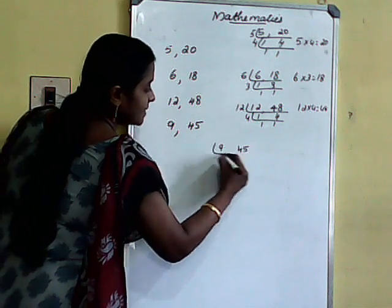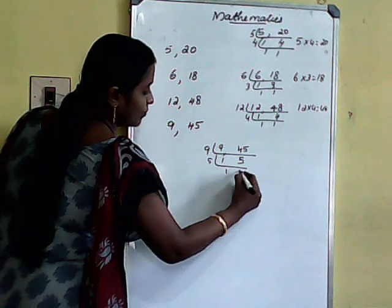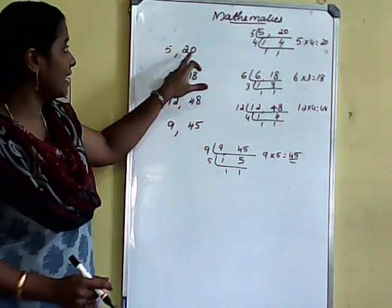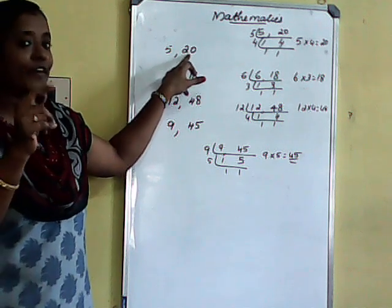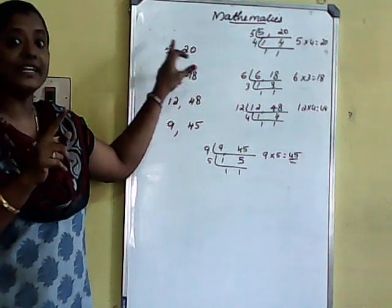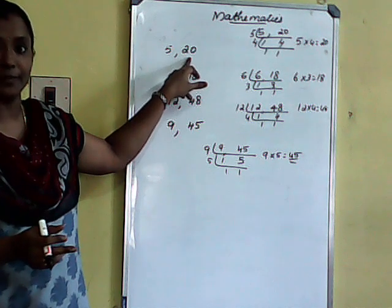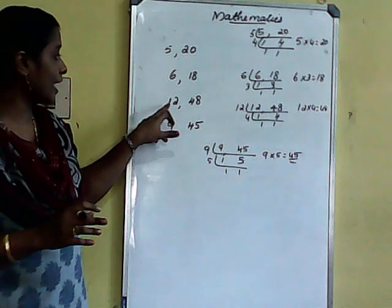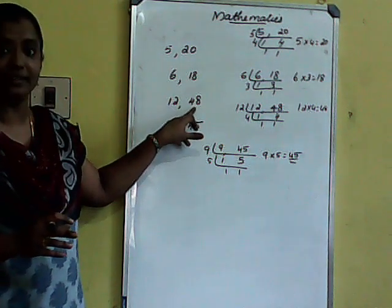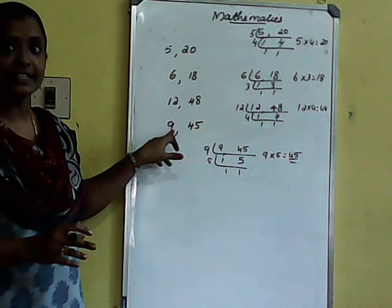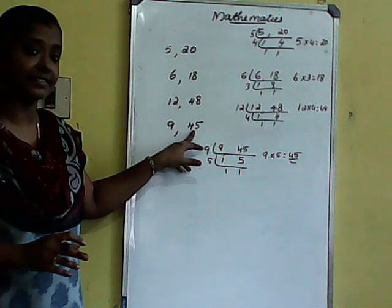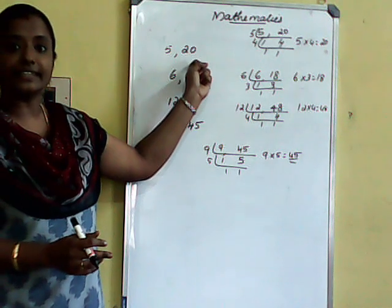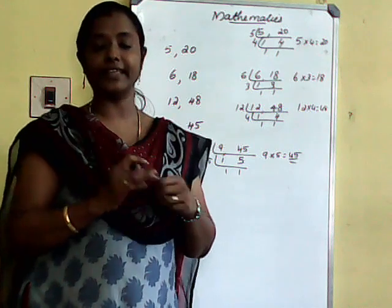For 9 and 45: 9 is a factor of 45, so LCM = 45. The rule is: if one number is a factor of the other, the LCM is the biggest number. So for co-prime numbers, LCM is their product; when one is a factor of the other, the LCM is the largest number.